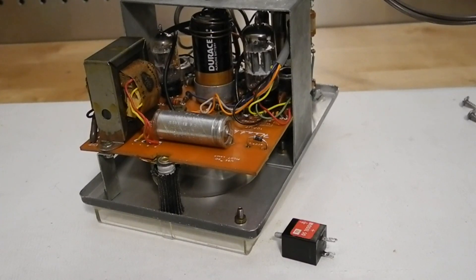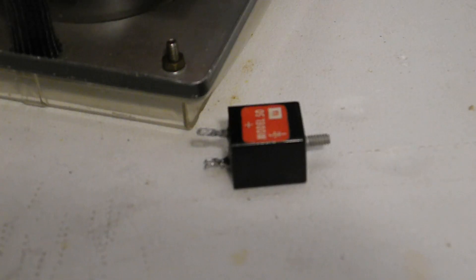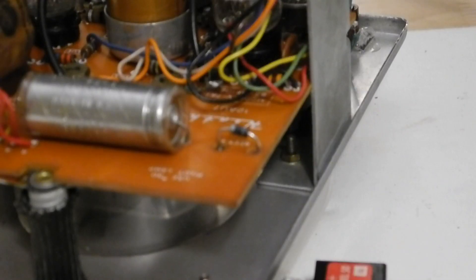Powering it up, there was no high voltage. It turned out that the selenium rectifier was bad. These are notorious for failing and can release a bad smell and toxic fumes. This unit is a little unusual as it's in a sealed case. I replaced it with a modern 1N4004 silicon diode. This is a change that Heathkit made in later VTVM models.